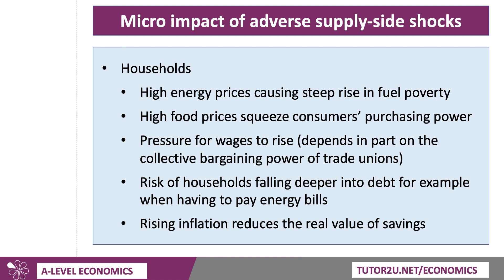Households are obviously affected at the micro level by adverse supply shocks. We've seen a steep increase in fuel poverty in the UK — where households spend at least 10% of their disposable income just heating their homes — which is clearly causing a lot of issues for millions of people. High food prices have a direct negative effect, squeezing consumers' real purchasing power. Wages tend to go up, depending on the collective bargaining power of unions. There is also a big risk of families falling deeper into debt, particularly when faced with an astronomical increase in their energy bills. And if inflation goes up and interest rates don't compensate, the real interest rates on savings and the real value of savings can go down.